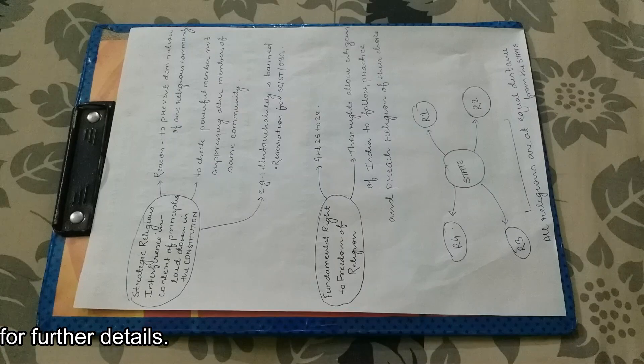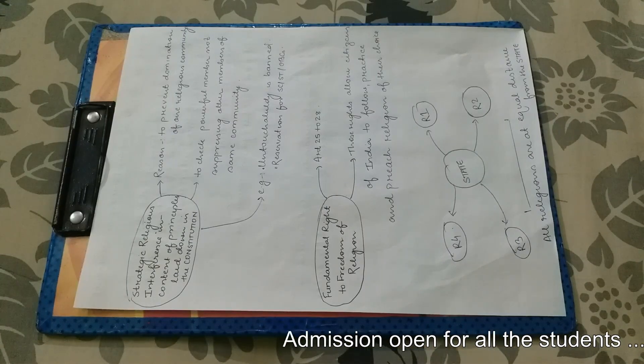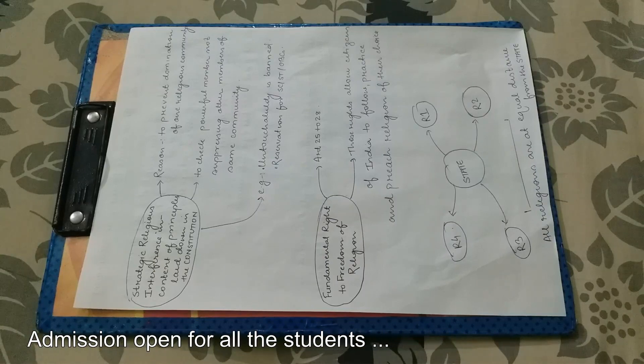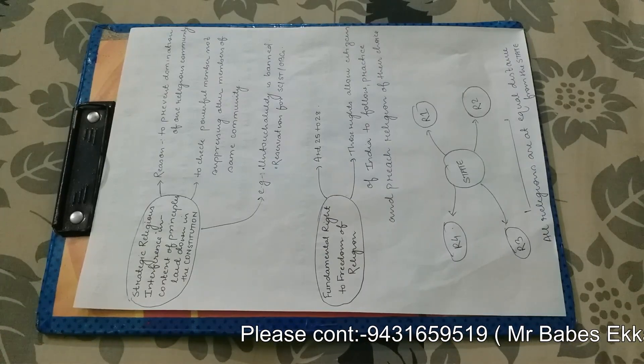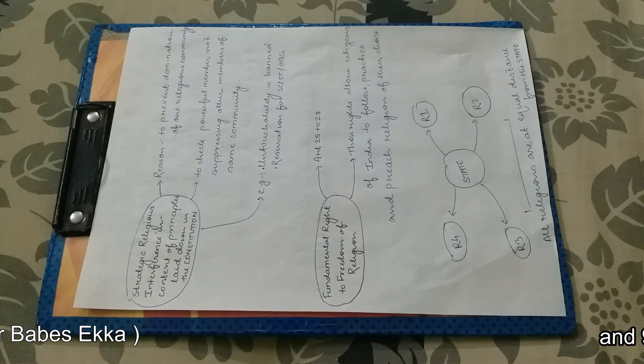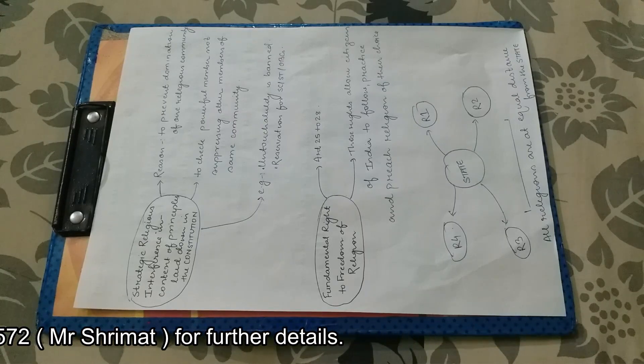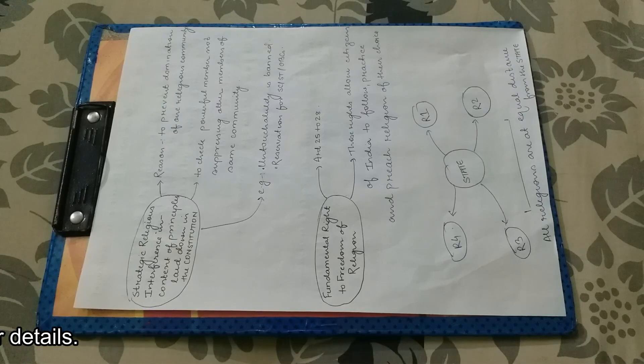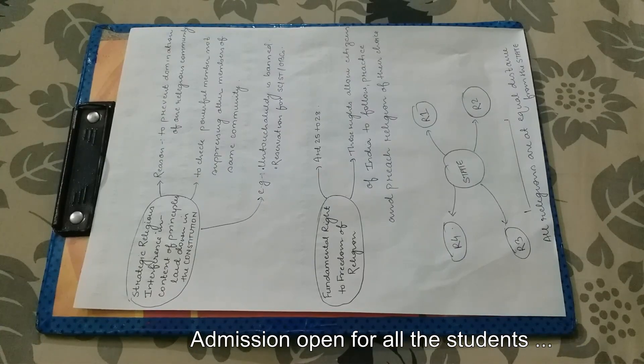For example, untouchability is banned. Untouchability is banned because it was against the principle of our constitution, that is equality. Everyone has to be treated equal. But practicing untouchability means there is something wrong in the society and not everybody is getting treated equally. So that is why untouchability was banned.